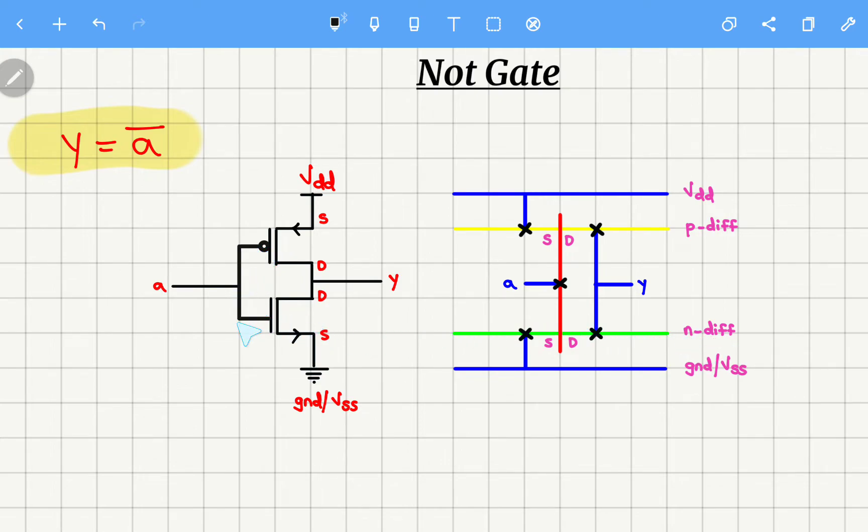Next, if you observe these two gate terminals are connected together. And this gate terminal will be indicated with polysilicon, and the color coding that is used is red.